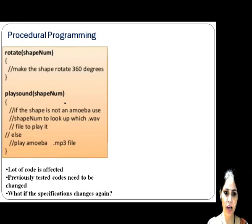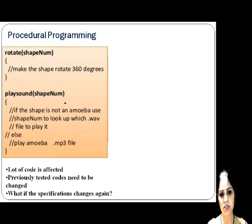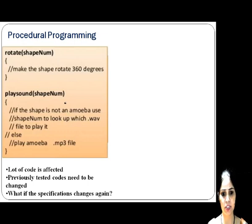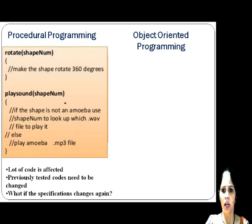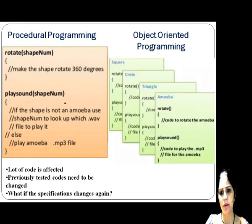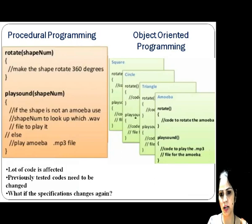In procedural programming, a lot of code was affected. Previously tested code needs to be changed and retested — and what if the specifications change again? Then the functions would have to be changed again and again. In object-oriented programming, on the other hand, Tanya only added a new class named Amoeba with the new functions.